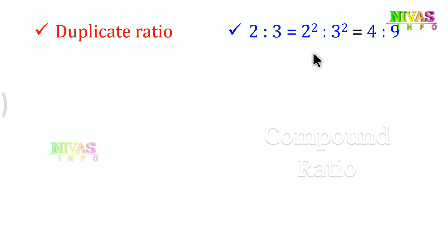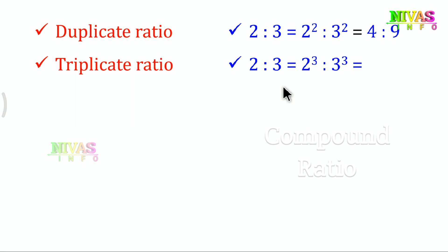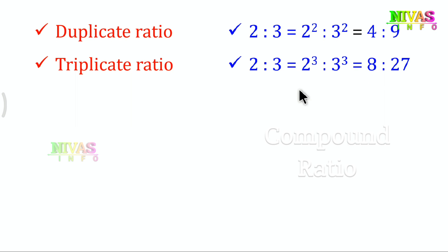The second type is Triplicate Ratio. For the same ratio 2 is to 3, the triplicate ratio equals 2 cubed is to 3 cubed, which is 8 is to 27. In triplicate ratio, the terms are raised to the power of 3.